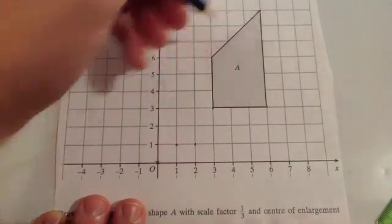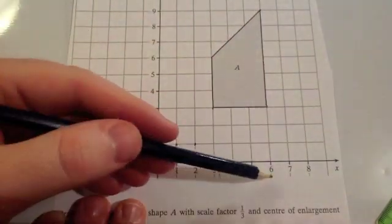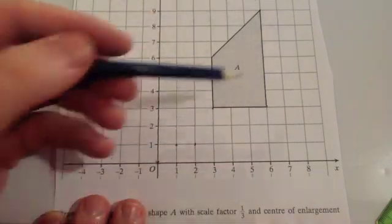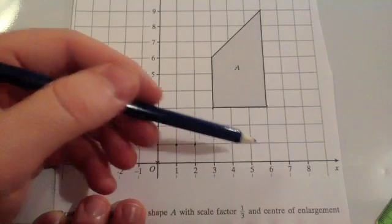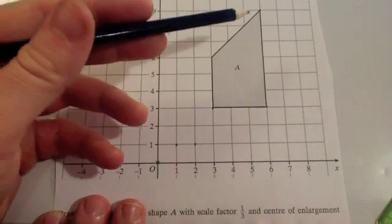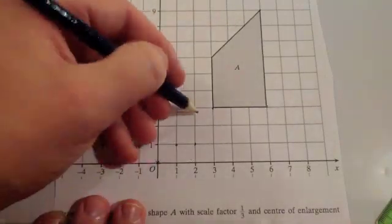Let's now look at this point. So this point here is 6 across and 9 up. Well, if you divide those by 3 you would get, so instead of 6 across you'd go 2 across dividing it by 3, and instead of going 9 up you'd divide that by 3 and you'd get 3 up. So you'd go 2 across and 3 up.